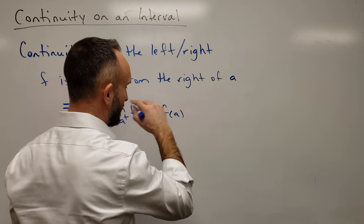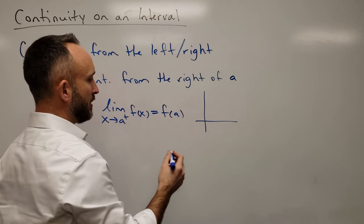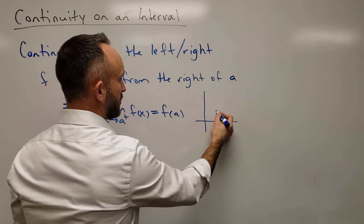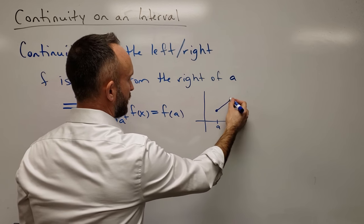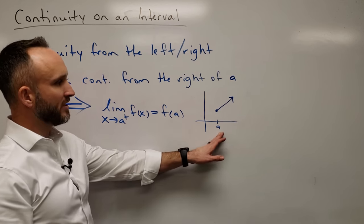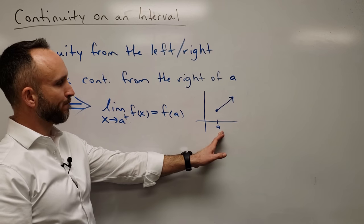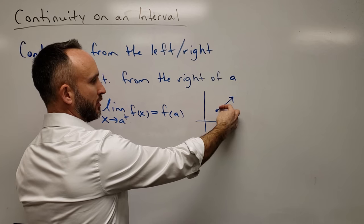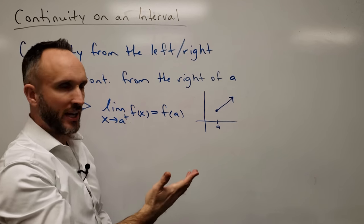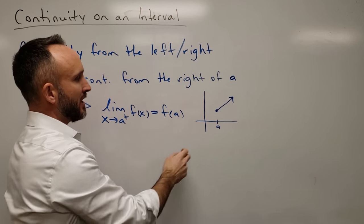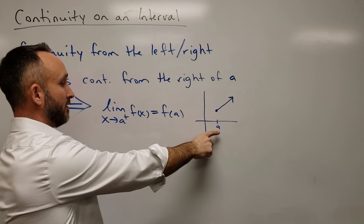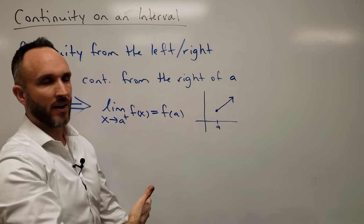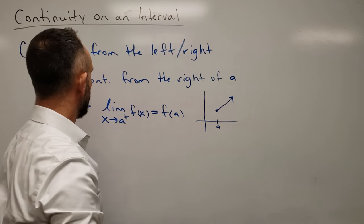A picture of that might look something like this. Say this is your a value, and your function does this kind of thing. This function is continuous from the right of a, because as x approaches a from the right, we keep getting closer and closer to the actual output of the function at a. It's not continuous at a from both sides because the left side of the limit doesn't even exist — the function is not defined on the left side of a.